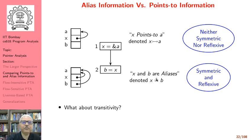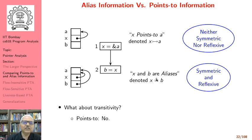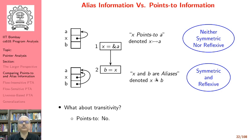The third property of interest is transitivity. Points-to relations are clearly not transitive: if x holds the address of a and a holds the address of some variable c, it does not mean that x holds the address of c.